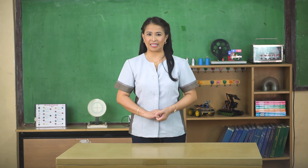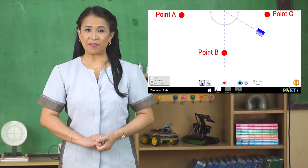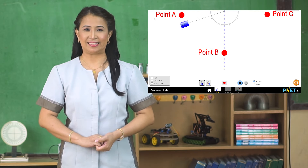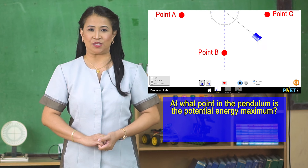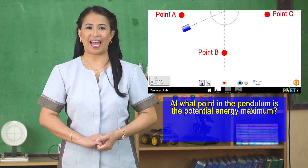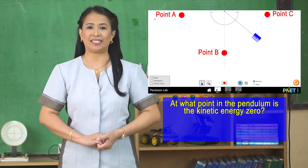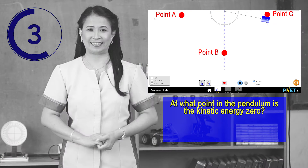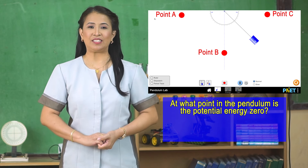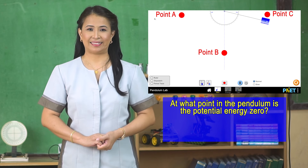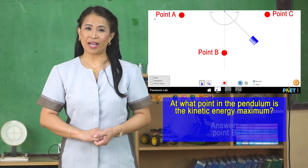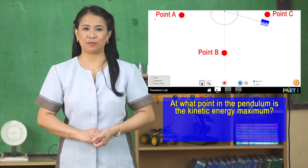Let us do this simple activity on a pendulum through a simulation. Identify the positions where kinetic energy and potential energy are maximum or minimum. At what point in the pendulum is the potential energy maximum? At what point in the pendulum is the kinetic energy zero?